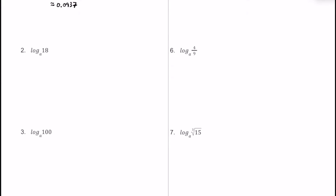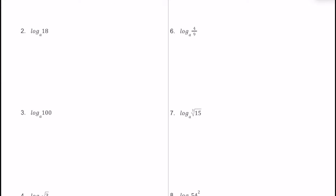For number 2, we have log base a of 18. Let's use the product rule and break down 18 into some smaller factors. I'm going to start with log base a of 9 plus log base a of 2, since 9 times 2 is equal to 18. Then I'm going to break up this log base a of 9 into a power, since 9 is a perfect square, rewriting this as log base a of 3 to the second power.